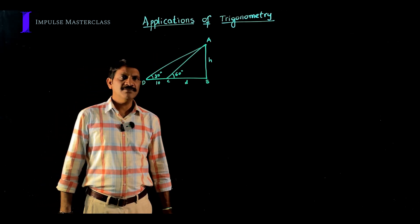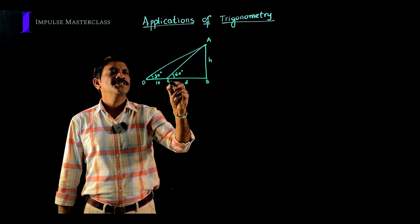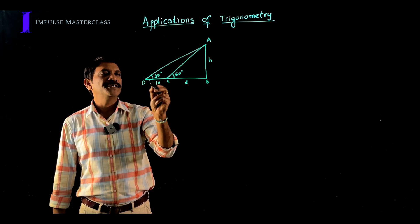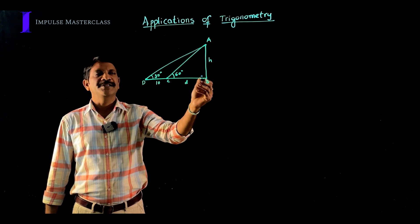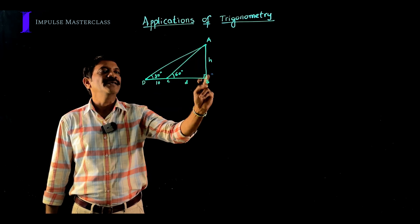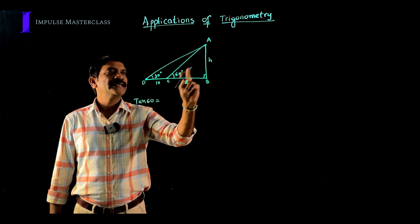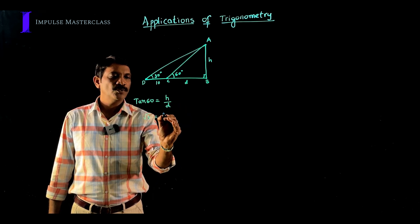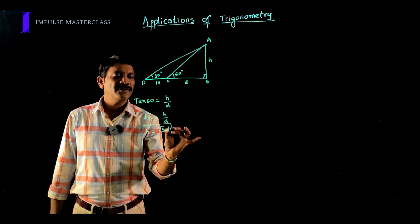Now let us come back to our initial question. The tower is AB with height H. The first point of observation is C, where the angle of elevation is 60 degrees, and the road width is d (BC = d). The second point of observation is D, which is 10 meters from C, so BD = 10 + d, with angle of elevation 30 degrees. We observe two right triangles: ACB and ADB. In triangle ACB: tan 60° = H / d, so √3 = H / d, giving H = √3 · d.